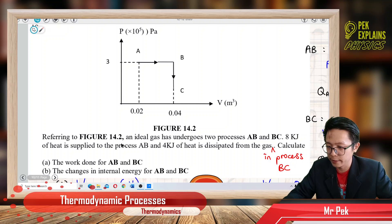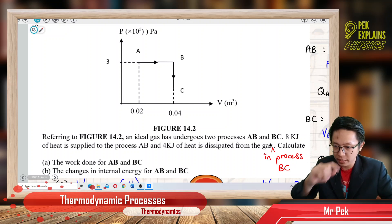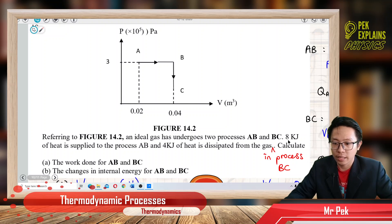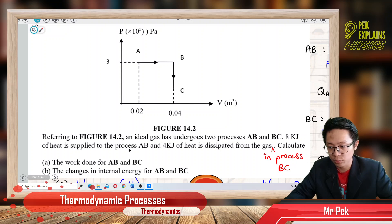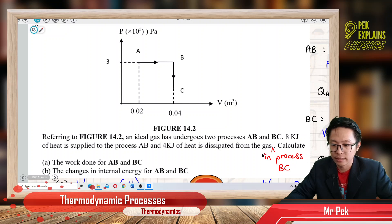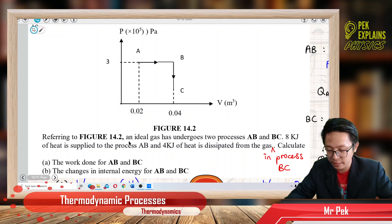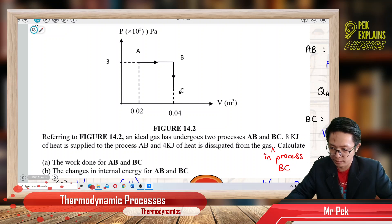Referring to this figure, an ideal gas undergoes two processes, A to B and B to C. 8 kilojoules of heat is supplied to the process A to B, and 4 kilojoules of heat is dissipated from the gas in the process B to C. Calculate the work done for AB and BC, and also the changes in internal energy for AB and BC.